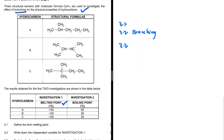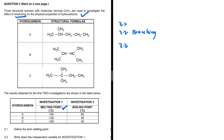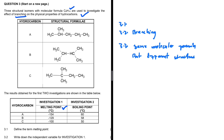Question 3.3: Explain why these three organic compounds are called structural isomers. Structural isomers have the same molecular formula but different structures. As stated, these three compounds have the same molecular formula C6H14, but different structures. We are essentially applying the definition of structural isomers here.